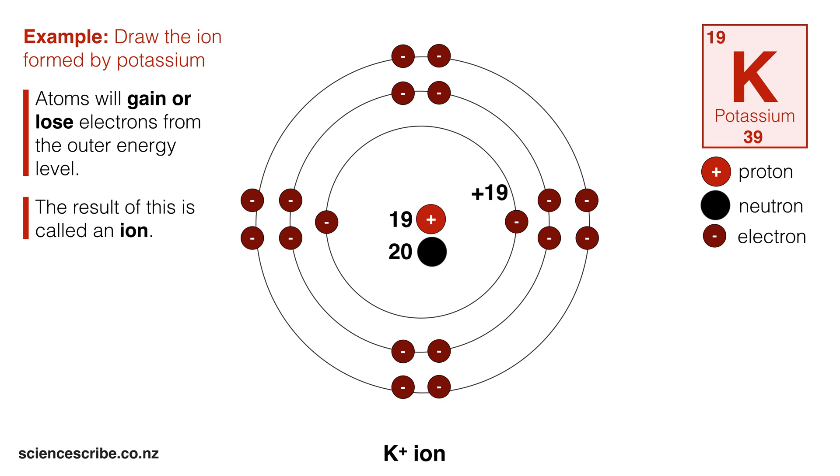To work out the charge of my ion, I can see that I've got 19 positive protons, I'm going to show that with a plus 19. If I count all my electrons, I can see that I've got 18 negative electrons. So overall I've got a plus 1 charge. The plus 1 I can just show on my symbol above K in the top right hand corner. So that's a K plus ion.